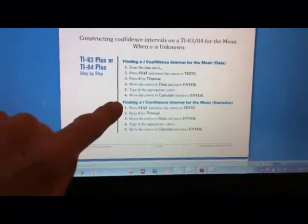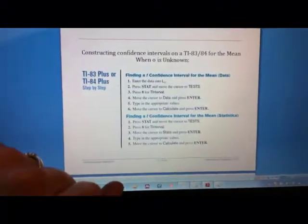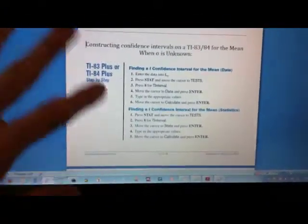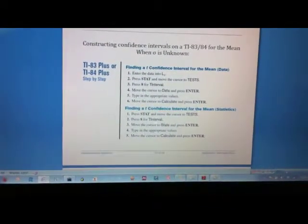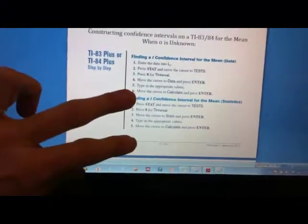So what you want to do, there's two ways to do this. One is if you are computing our confidence interval from the raw data, and that's what we have. We have the raw data. We are not starting from a statistic. So that's the second option.